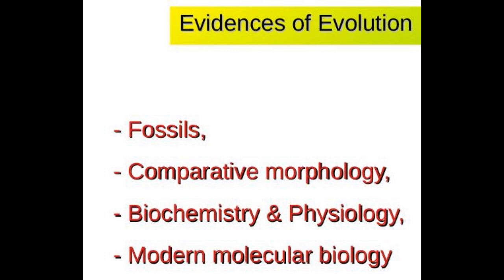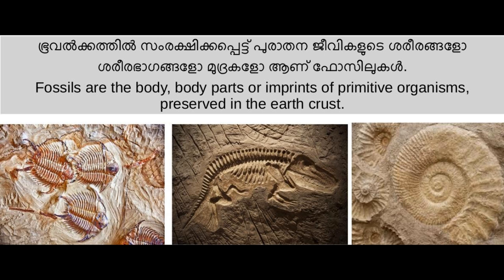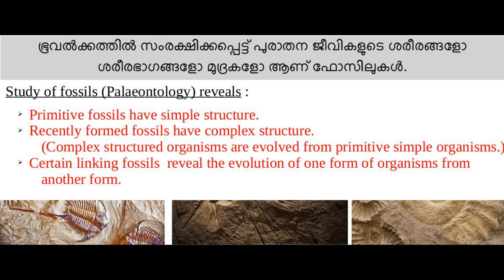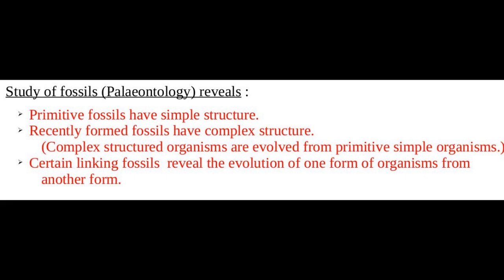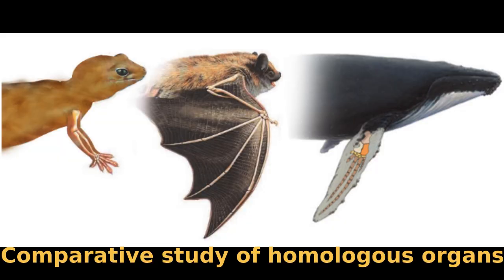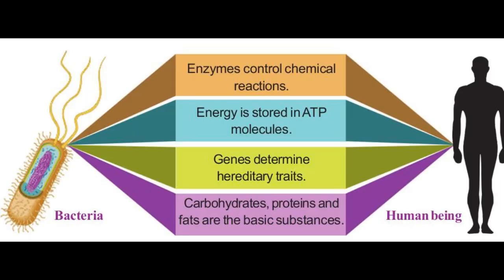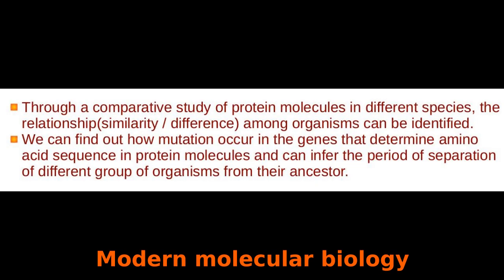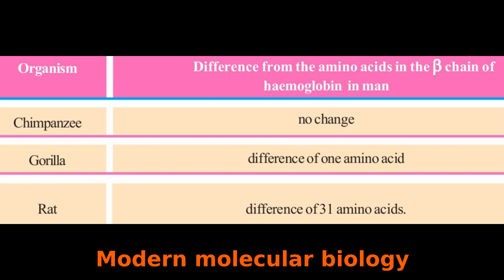Paleontology, or the study of fossils, comparative morphology of homologous organs, biochemistry, physiology, and modern molecular biology provide evidence to validate evolution. The study of fossils reveals that complex structured organisms evolved from primitive simpler organisms. Certain linking fossils reveal the evolution of one form of organism from another. Comparative morphological studies of homologous organs, biochemistry, and physiology justify the inference that all organisms evolved from a common ancestor. Through a comparative study of protein molecules in different species, evolutionary relationships can be identified. For example, the comparison of amino acids in hemoglobin reveals that the chimpanzee is the closest living creature to humans.